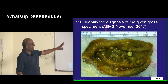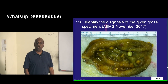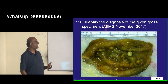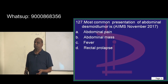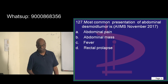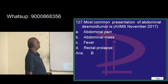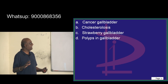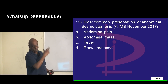A gross specimen has been given. These are polyps in the gallbladder — the gross appearance you need to be sure about. Regarding the earlier question on why it is not cholesterolosis or a strawberry gallbladder — once you see the gross appearance of all specimens you will never forget how they look. The polyp is clearly visible in the picture.